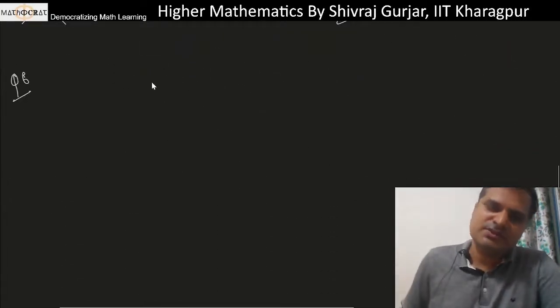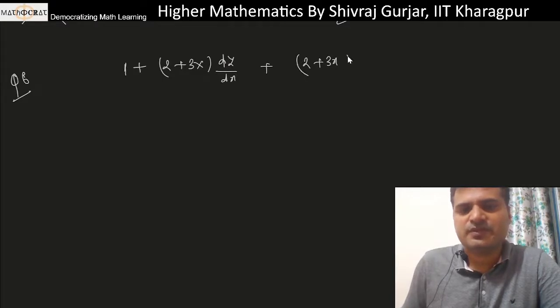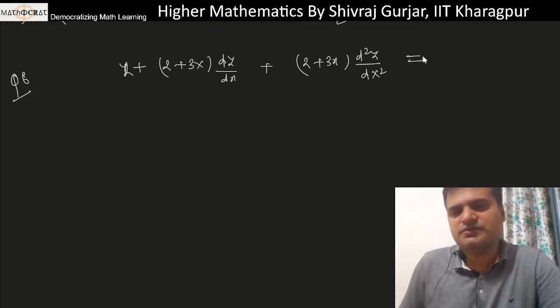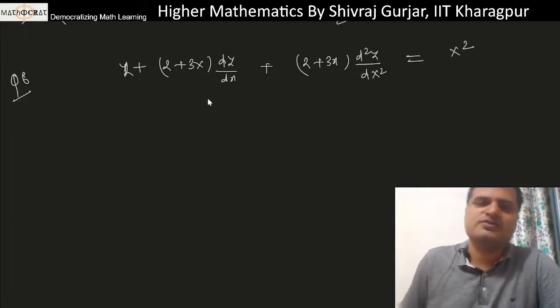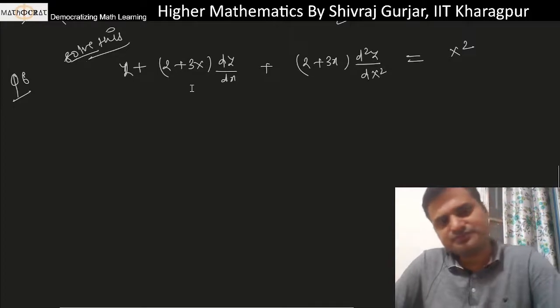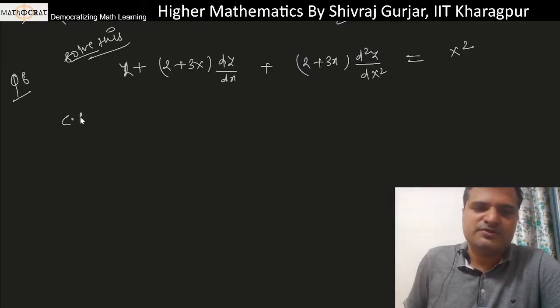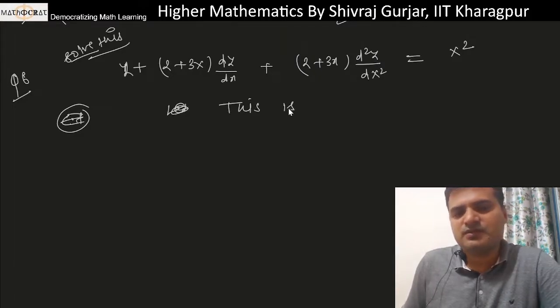Let me take question 5b. The equation given is (1+2+3x)dy/dx + (2+3x)d²y/dx² = x². Let's solve this. Find the complete solution of this. Complete solution means complementary function plus particular integral, which is another name for general solution.